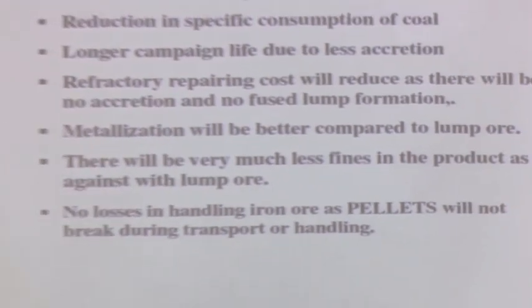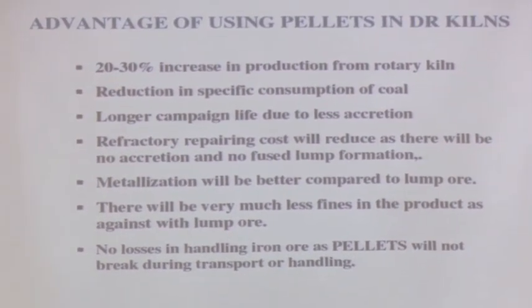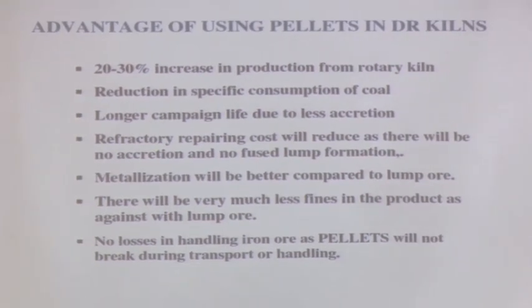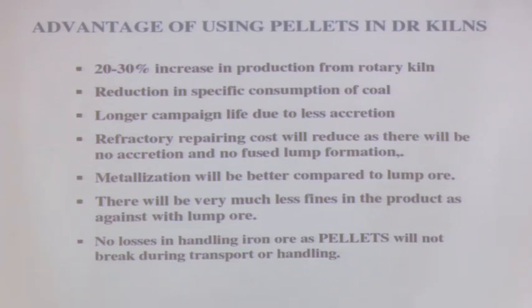There are certain advantages associated with using pellets. Apart from blast furnace, there is an alternative route of iron making — the sponge iron route, technically called directly reduced iron or DRI. In this route, non-coking coal can be used. We do not melt the iron but remove most of the oxygen by reacting it with a source of carbon. When oxygen leaves, the iron ore leaves a porous body — that is why it is called sponge iron, though technically the correct term is directly reduced iron.